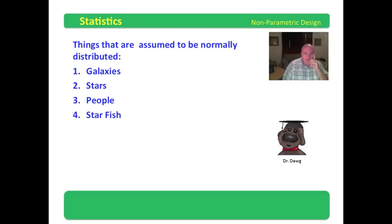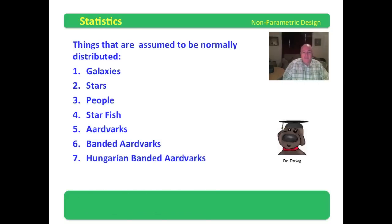Starfish can be normally distributed. What's the average weight of starfish for an adult starfish? Aardvarks can be normally distributed. Banded aardvarks can be normally distributed. And the Hungarian banded aardvarks and the albino Hungarian banded aardvarks can be normally distributed.